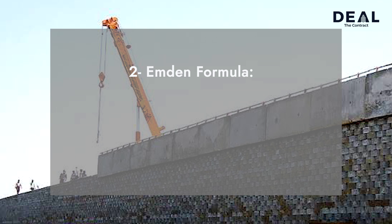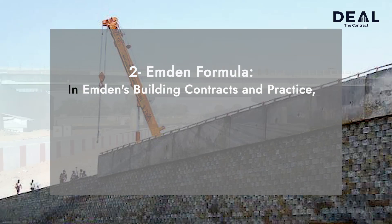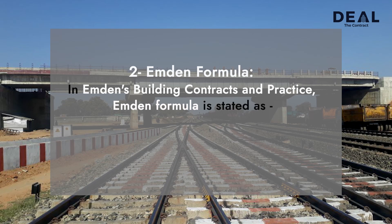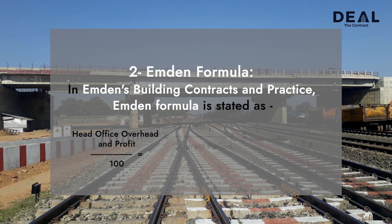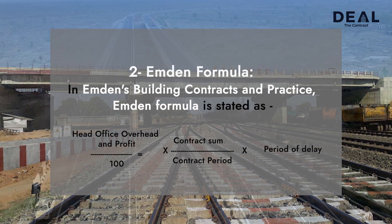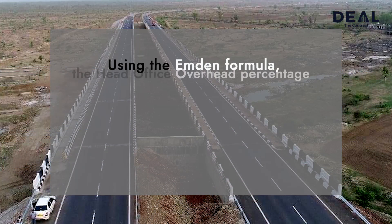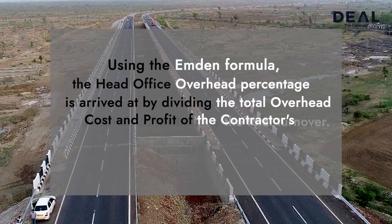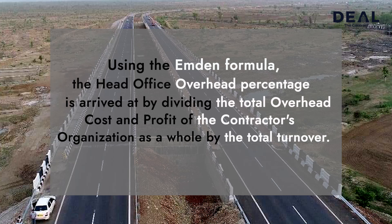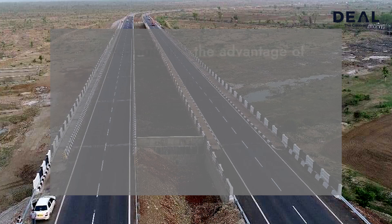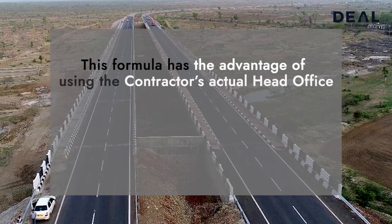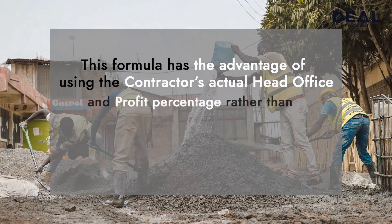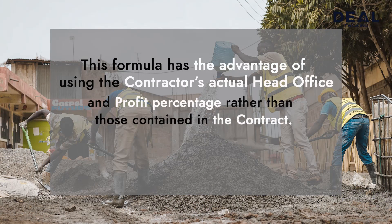2. Emden Formula: In Emden's Building, Contracts and Practice, the Emden Formula is stated as — head office overheads and profit divided by 100, multiplied by contract sum divided by contract period, multiplied by period of delay. Using the Emden Formula, the head office overhead percentage is arrived at by dividing the total overhead cost and profit of the contractor's organization as a whole by total turnover. This formula has the advantage of using the contractor's actual head office overhead and profit percentage rather than those contained in the contract.